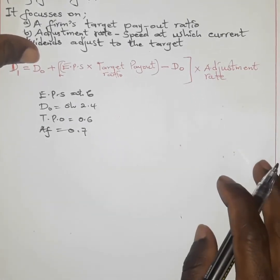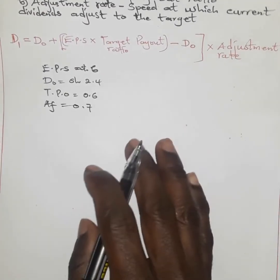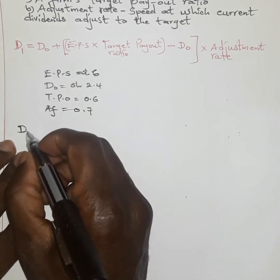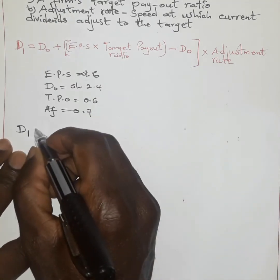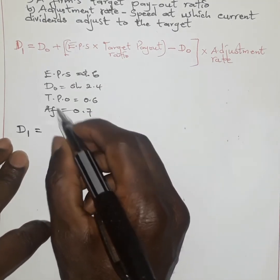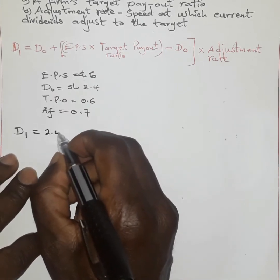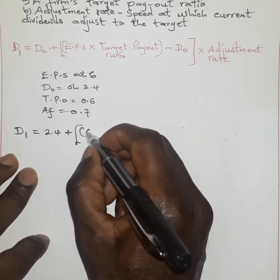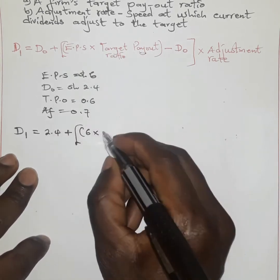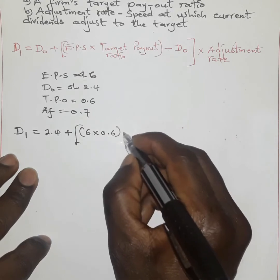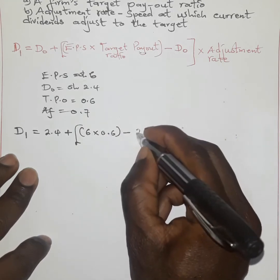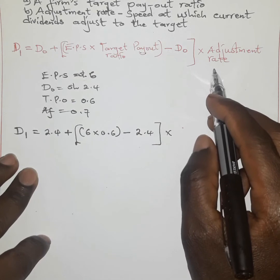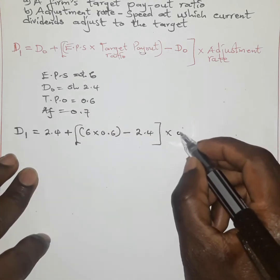We now replace the variables in the equation. The dividend in the current year is given by: 2.4 plus, in brackets, the earnings per share of 6 times the target payout ratio of 0.6, minus the dividend paid in the previous year of 2.4, close brackets, all multiplied by the adjustment rate of 0.7.